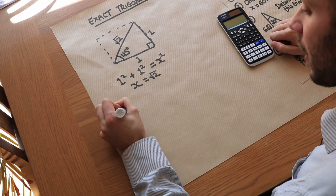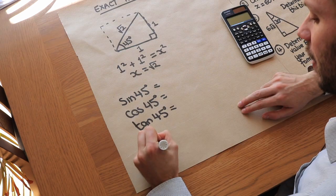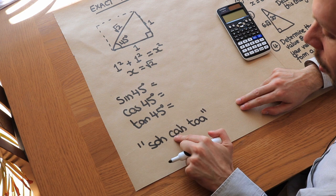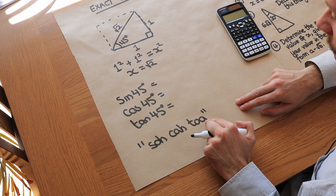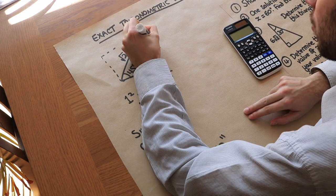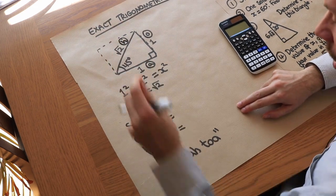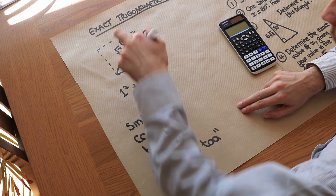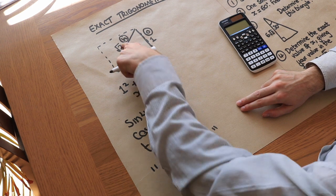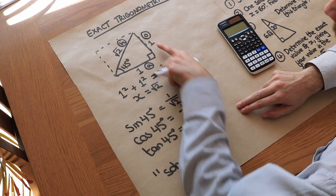Using this diagram we can find sine, cos, and tan of 45 degrees using SOH-CAH-TOA. Sine of the angle is opposite over hypotenuse, cos is adjacent over hypotenuse, tan is opposite over adjacent. For sine of 45: the opposite is 1, the hypotenuse is √2, so sine of 45 = 1/√2. Cos of 45 is also adjacent over hypotenuse = 1/√2. Tan of 45 is opposite over adjacent = 1/1 = 1.